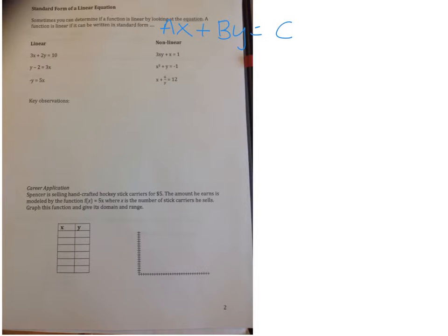The a is whatever coefficient is in front of the x—it could be 1 or negative 2. The b is the coefficient in front of the y, and c is just the number. If you look at this box here, you have 3x plus 2y equals 10, y minus 2 equals 3x, and negative y equals 5x. Those are all linear.